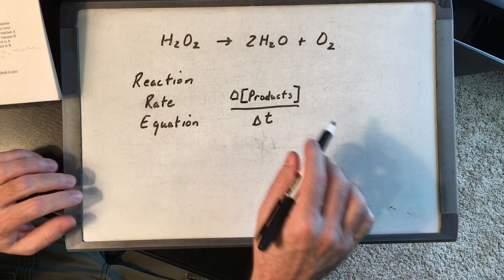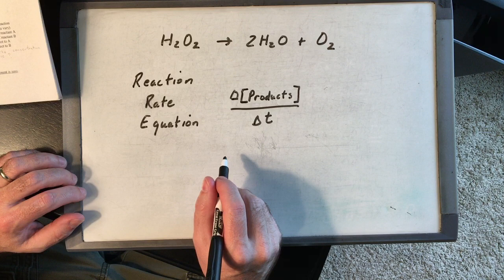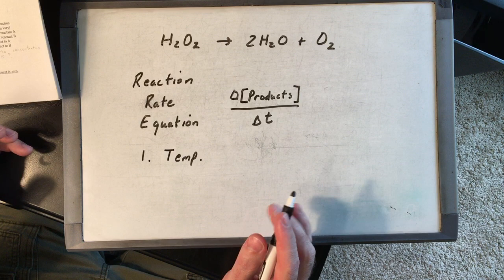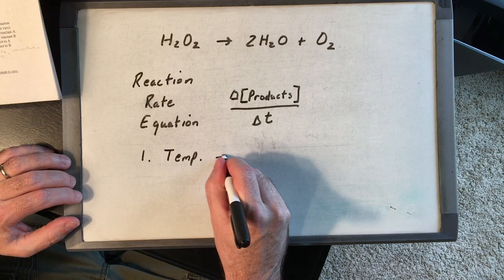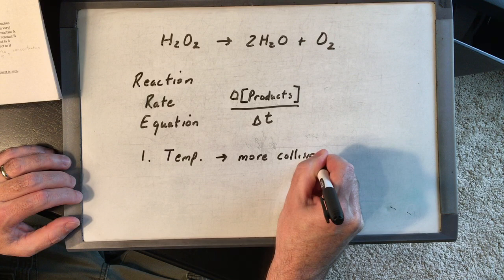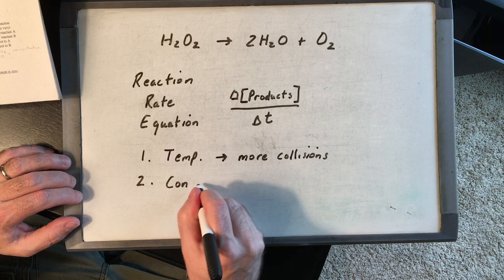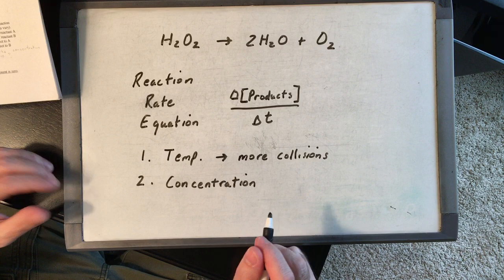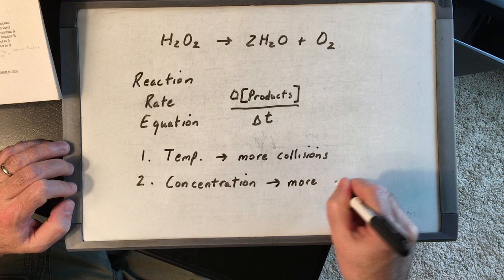The factors that affect reaction rate: the first one is temperature. Raising temperature increases reaction rate because molecules move faster — there are more collisions. The second is concentration. If you have more molecules per unit of area, there are going to be more collisions. It's all about the collisions.